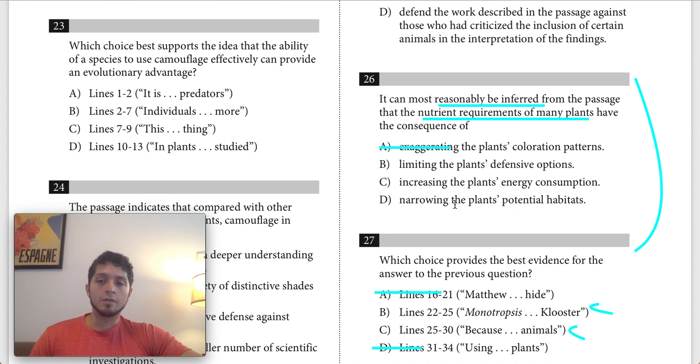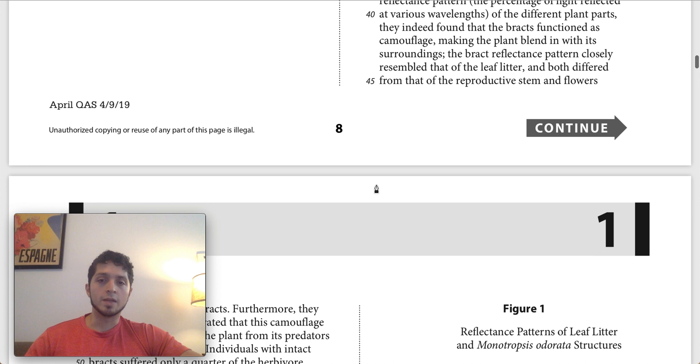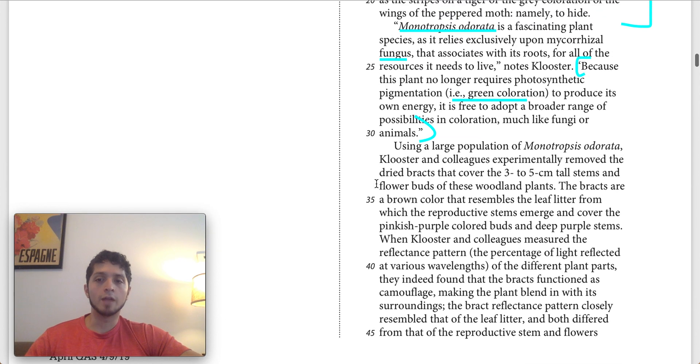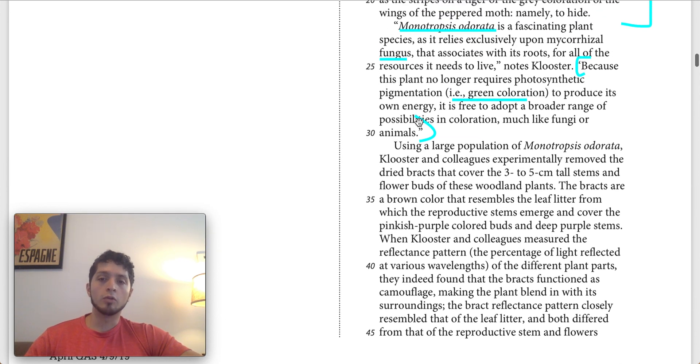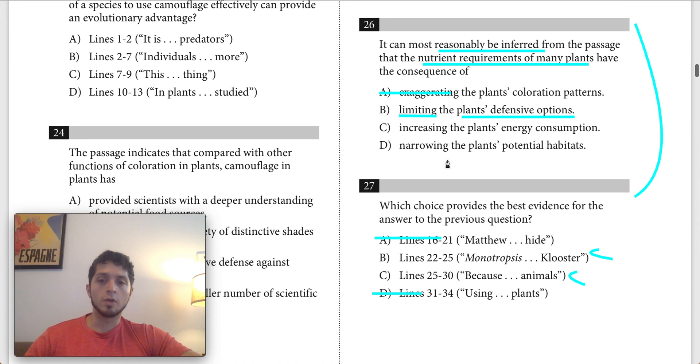B says limiting the plant's defensive options. I think that this is pretty good because we have the sense of narrowing with limiting. And then the plant's defensive options basically means it's not able to use camouflage like the other plant we're looking at. And I think that makes sense because in the context we're talking about camouflage. Because it has a more narrow range of possibilities in coloration, a lot of plants are not able to use camouflage like monotroposis odorata. So I think this is a strong answer choice. Let's keep it.